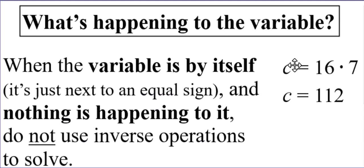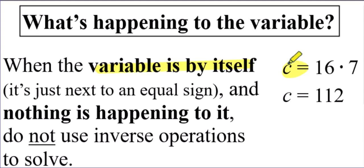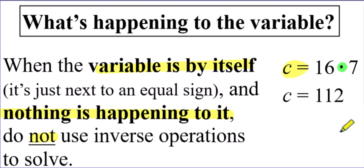On this equation, c equals 16 times 7. What's happening to the variable? Nothing. This c has nothing next to it — it's already by itself. The only thing next to it is an equal sign. So when the variable is by itself, nothing is happening to it. When a situation like that shows up on an equation, you are not going to have to divide on both sides — you're not going to use inverse operations. Instead, you'll just do what the equation says to do, which says to multiply. You'll take 16 times 7, and you'll get your answer of 112.